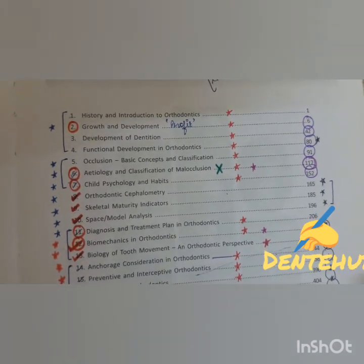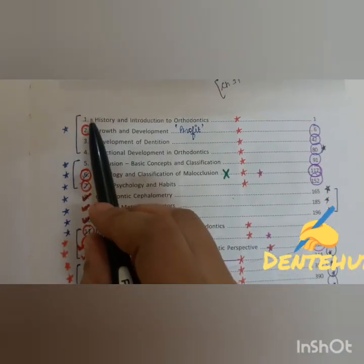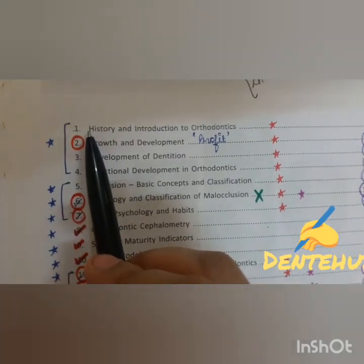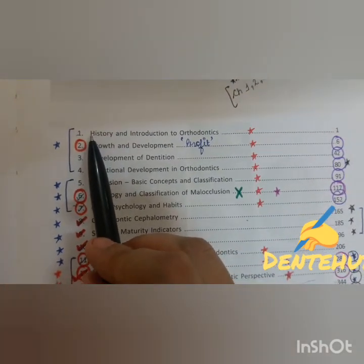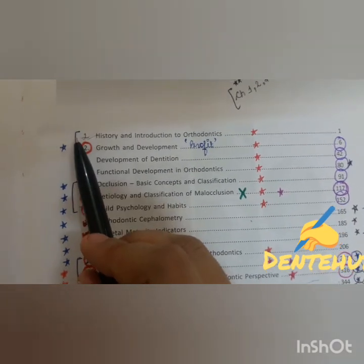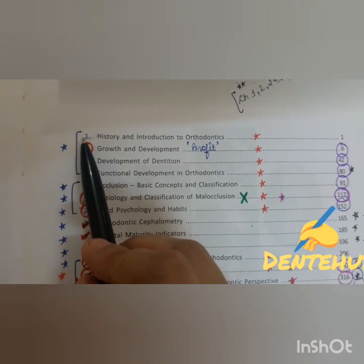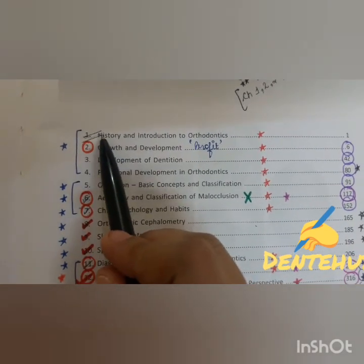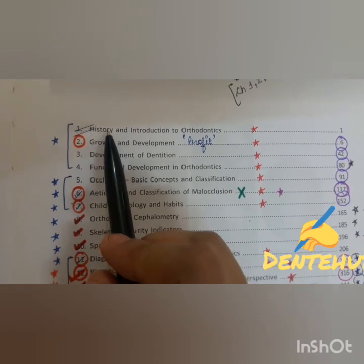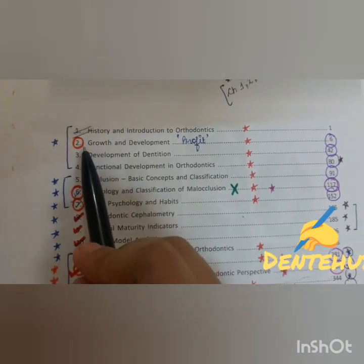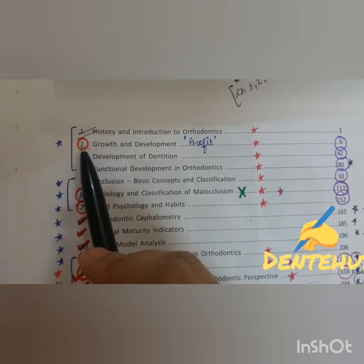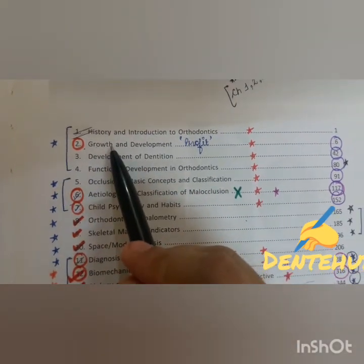The important topics that need to be done: as the NEET MDS pattern is quite different from AIPG, there are lots of chances that scientist names and their contributions will be asked. So the number one important topic is history and introduction to ortho. And then, growth and development — this is the second chapter and is very, very important.